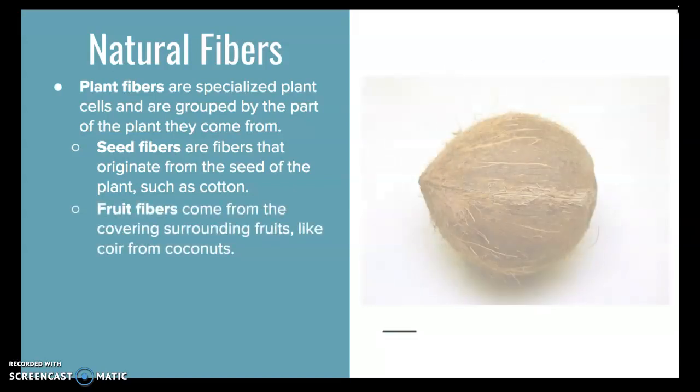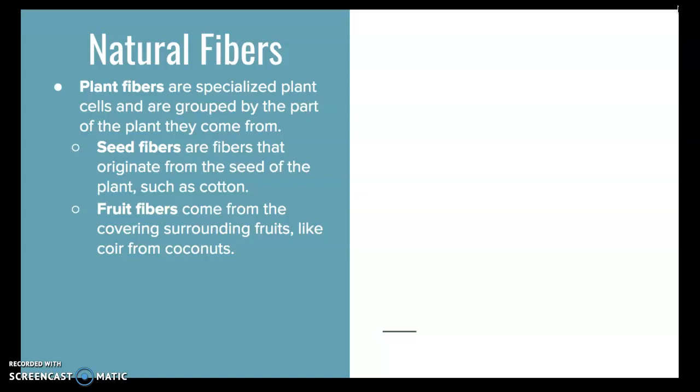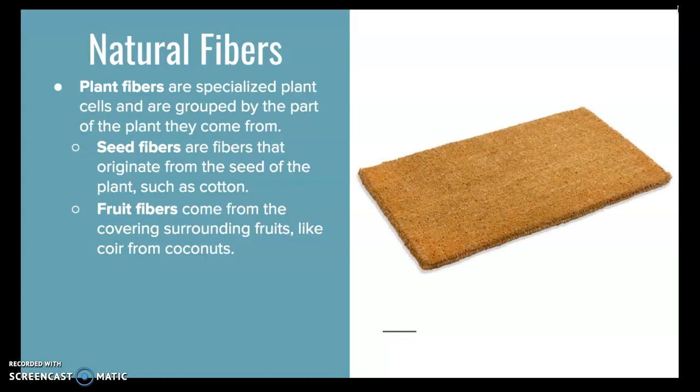Fruit fibers come from the covering surrounding fruits, like coir from coconuts, and this coir can be used to make doormats.